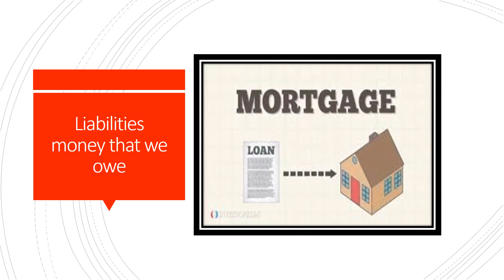What are liabilities? Liabilities is money that we owe to other people. If you have a loan — you borrowed money from your father — you owe your father money, that is a liability. If you borrowed money from your gran, you owe her money, so that is a liability. Your parents might own a house but they owe the bank money for that house — that is a liability. If you buy clothes from Uzi on credit, you owe Uzi money, so that is a liability.